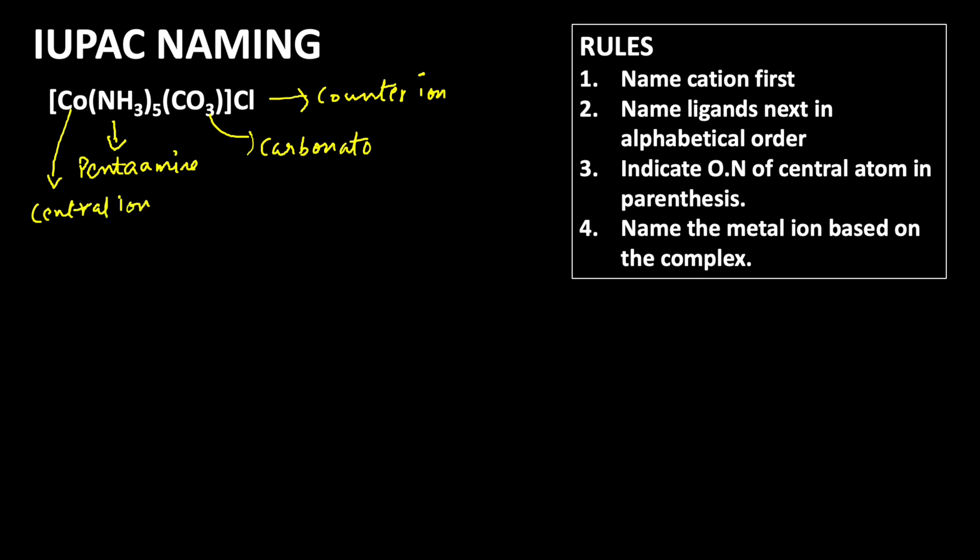Next, we need to find the oxidation state of the central atom. For that, we should know the charge carried by the complex cation, because here the complex ion is a cation. The counter ion is an anion, so the complex ion must be a cation.